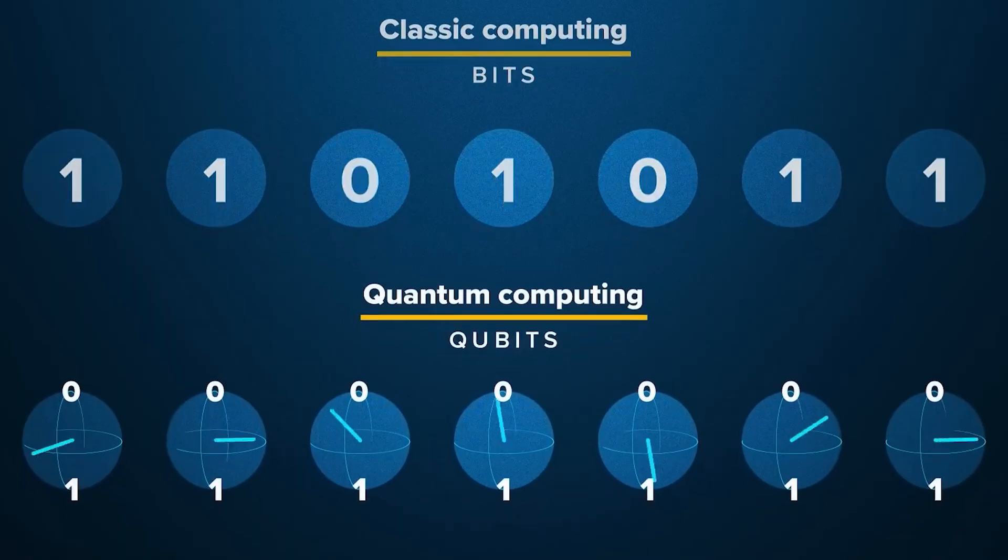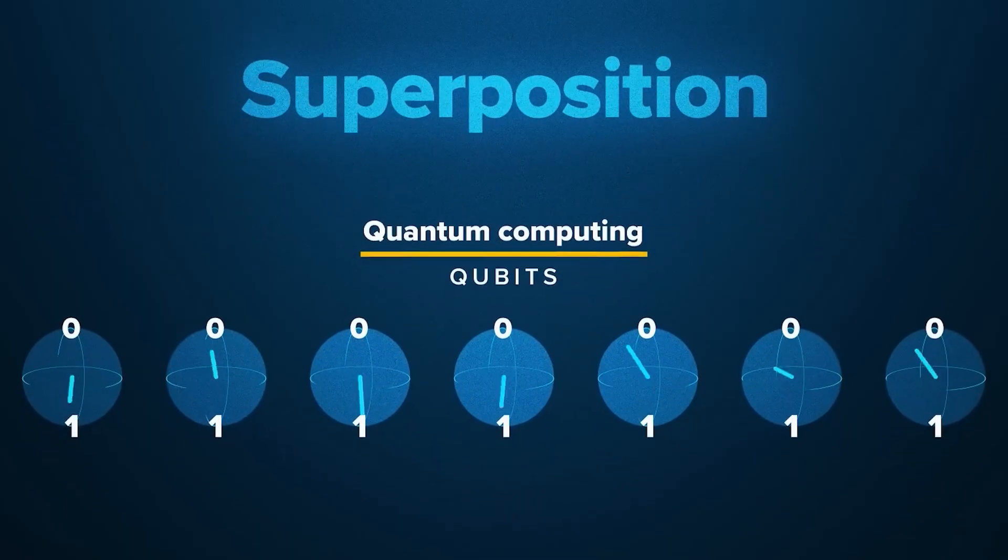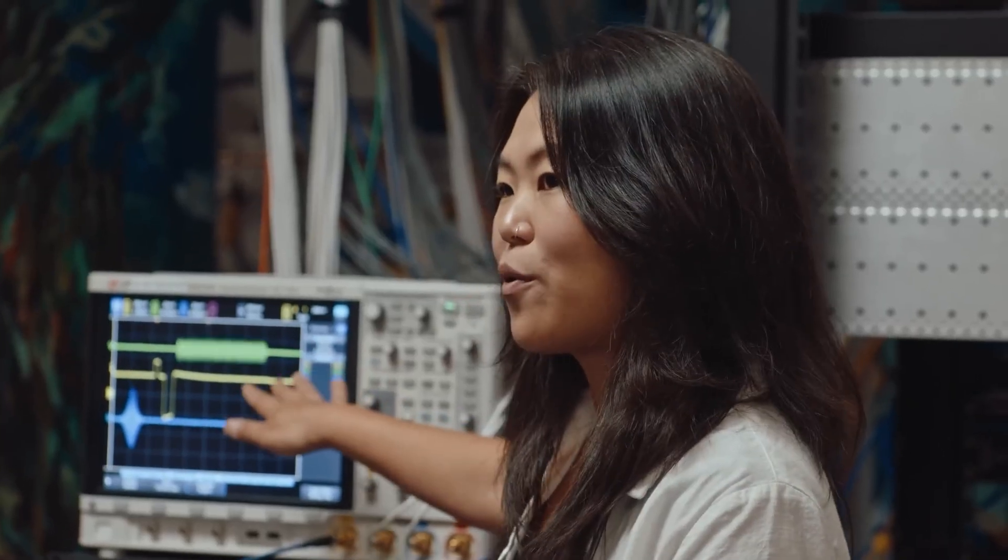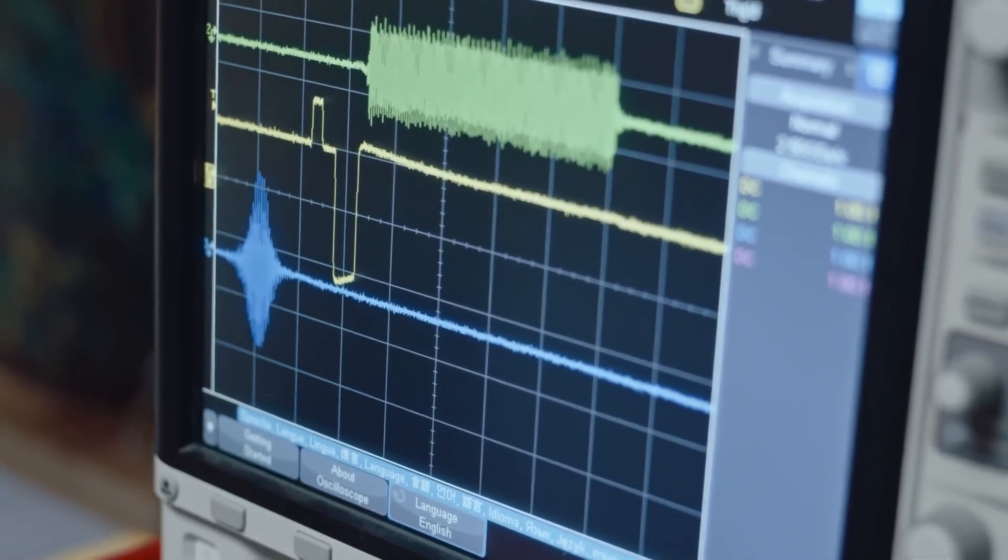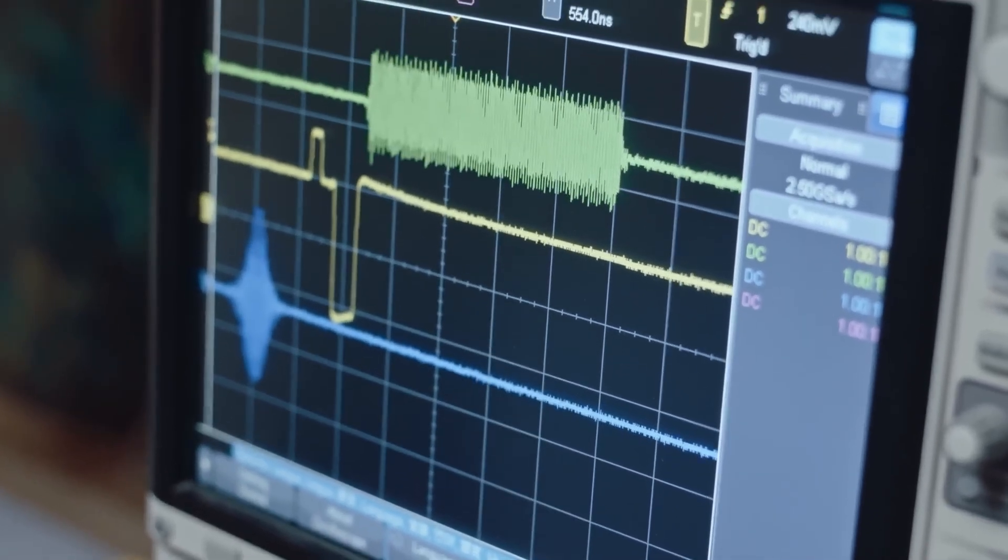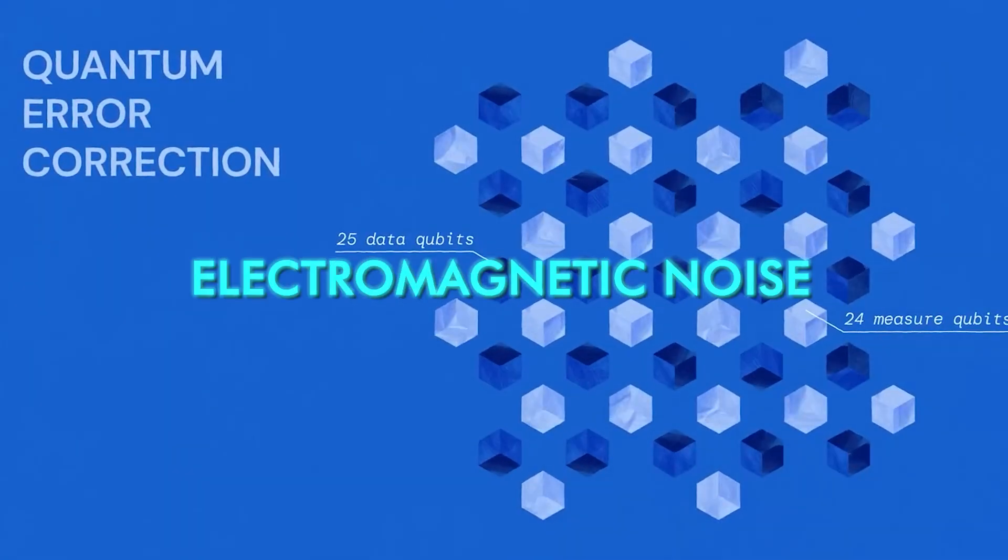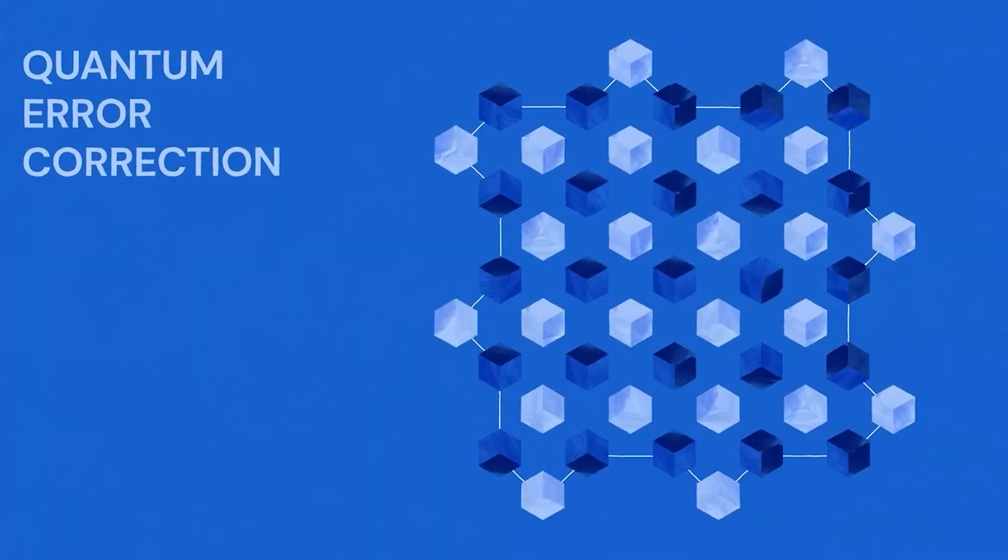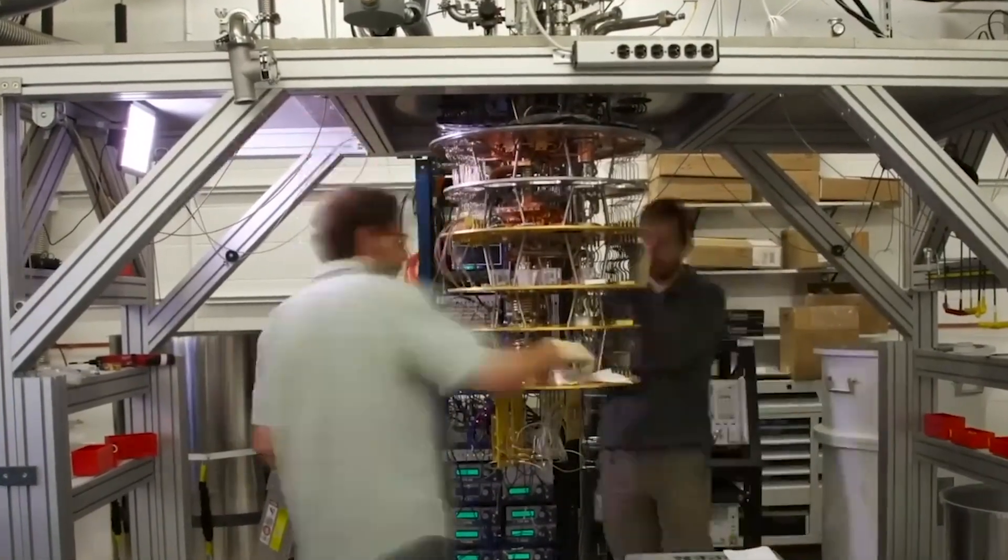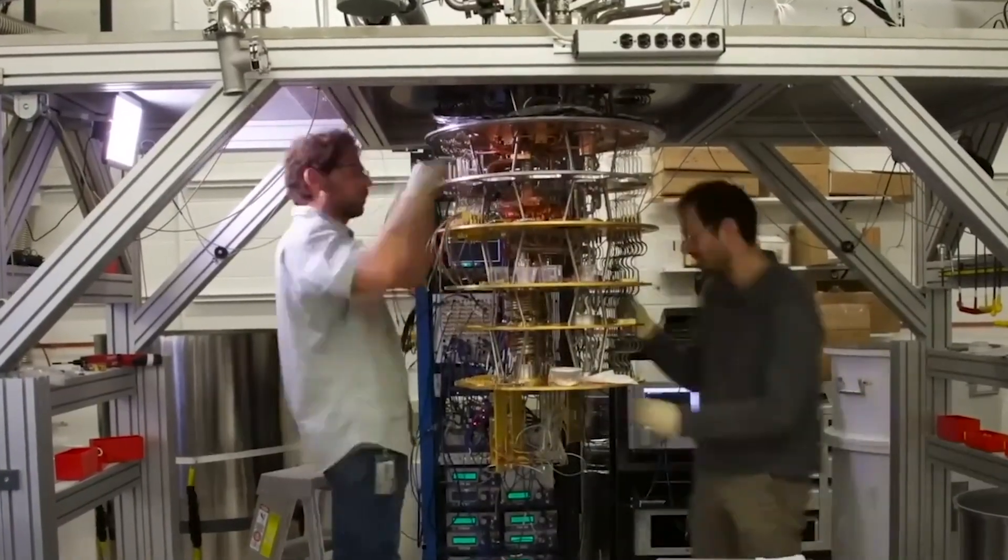For years, quantum computing was seen as the next great leap in computation, capable of unlocking entirely new categories of solutions. But in reality, those advantages come with enormous technical costs. Qubits are extremely sensitive to their environment. Heat, vibration, electromagnetic noise, and even tiny material imperfections can cause errors. A small disturbance that would be irrelevant to a classical computer can completely destroy a quantum state.